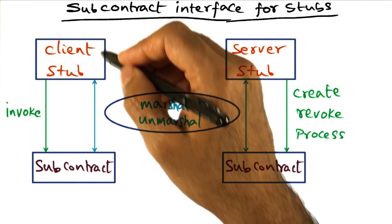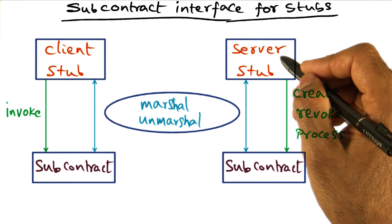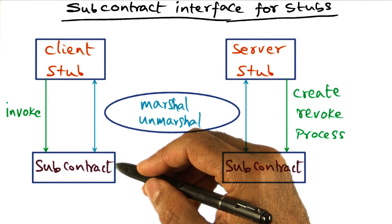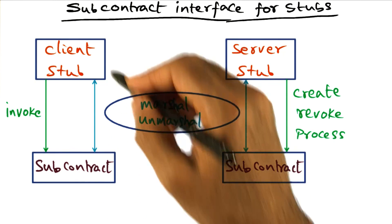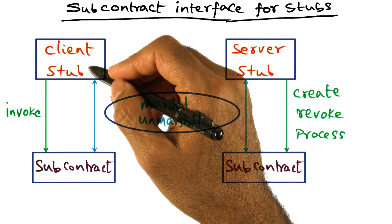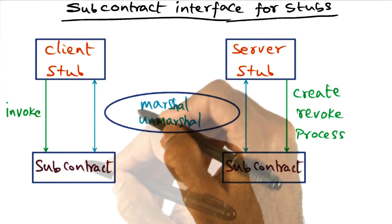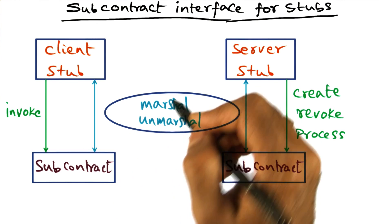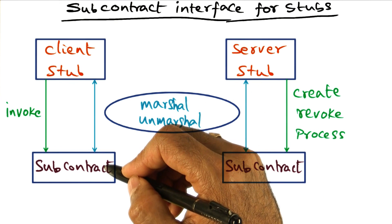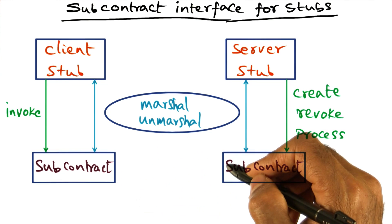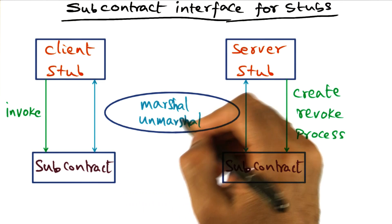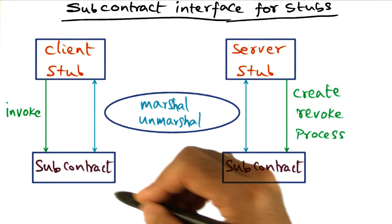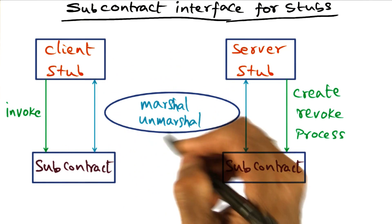Depending on whether this invocation is going to a server on the network, or on the same machine, or on a different processor on the same machine — all of those details are buried in the subcontract. When the client stub wants to marshal the arguments for a particular invocation, it just calls the subcontract, which knows how this invocation will be handled and does the appropriate marshalling based on the server's location. That's the beauty of the subcontract mechanism.